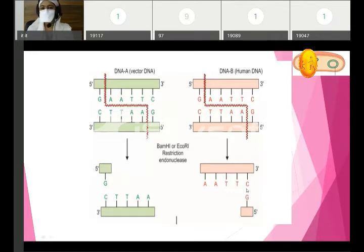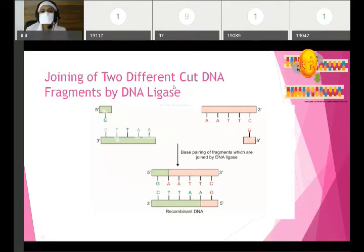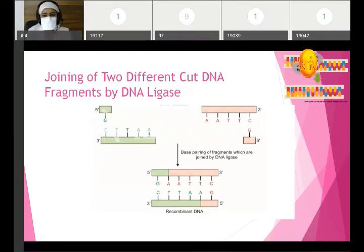Both sequences — from vector and human DNA — are palindromic and good for recombination. Now the third step is finished — that is the insertion. The fourth step is joining of two different cut DNA fragments by DNA ligase. We have these two fragments cut by the same restriction endonuclease enzyme from both human DNA and vector DNA, and now we join them with DNA ligase.